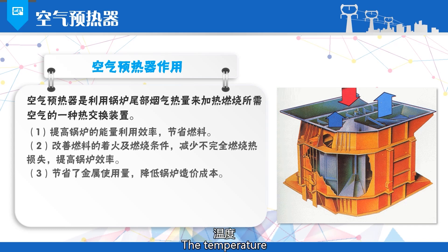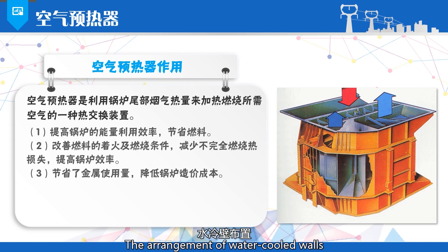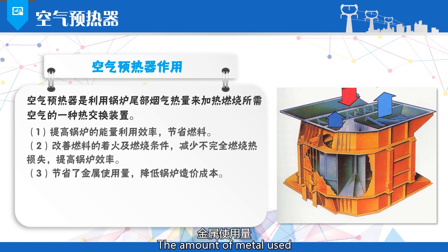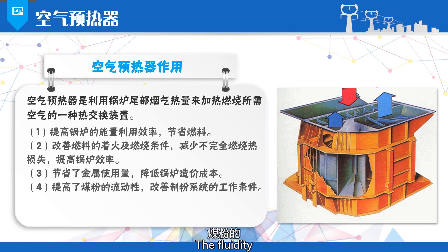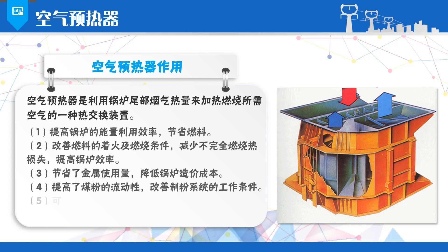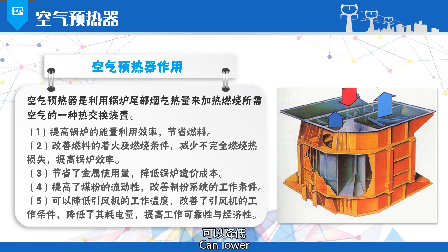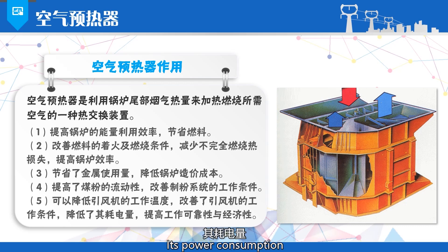Three, increasing the temperature of the furnace strengthens the radiative heat exchange within the furnace, which can reduce the arrangement of water-cooled walls, decrease the heat receiving area, saving the amount of metal used and lowering the cost of the boiler. Four, utilizing the heated air to convey the coal powder improves the fluidity of the coal powder, enhancing the working conditions of the pulverizing system. Five, reducing the exhaust gas temperature can lower the operating temperature of the induced draft fan, improving the working conditions of the induced draft fan, reducing its power consumption, and improving its operational reliability and economic efficiency.